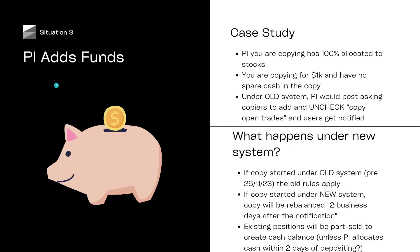This situation is the PI adding funds in where the copier has not yet matched the fund addition. So let's imagine the PI you're copying has all of the money allocated to stocks, no cash. You're copying for $1K, you've also got $1K in stocks, no cash. So under the old system, if the PI added $200 — 20% extra — then you would get a notification from eToro saying you need to stick $200 in this copy and you need to uncheck copy open trades. This box doesn't exist anymore, which we'll come to. The PI would, if they were doing their job properly, wait for a few days to let you add that money. Then you would have $200 spare, they would have the equivalent of $200 spare, and you'd be in sync.